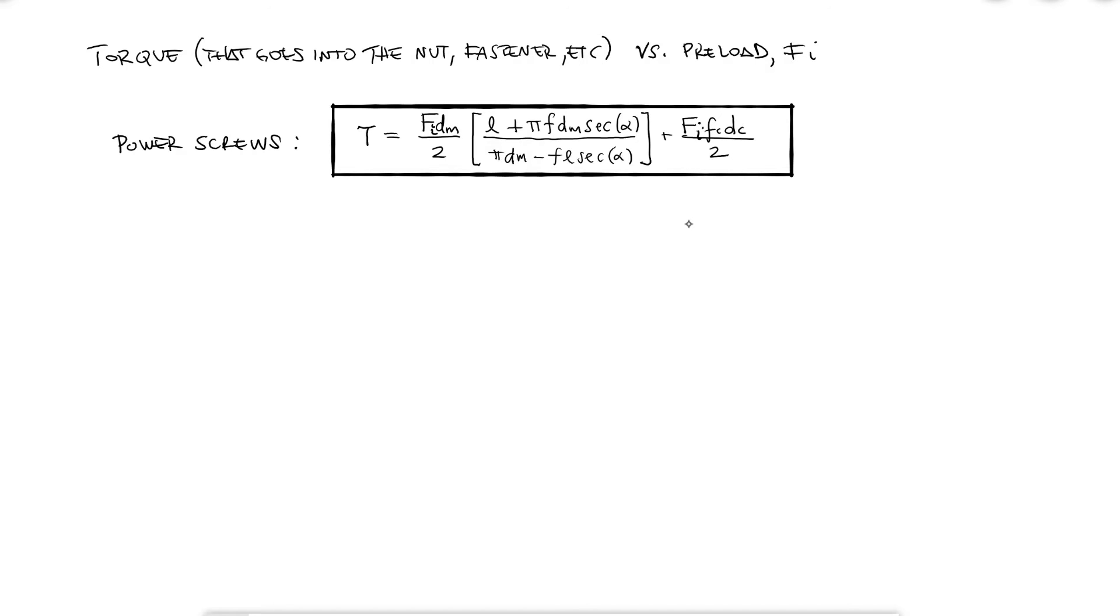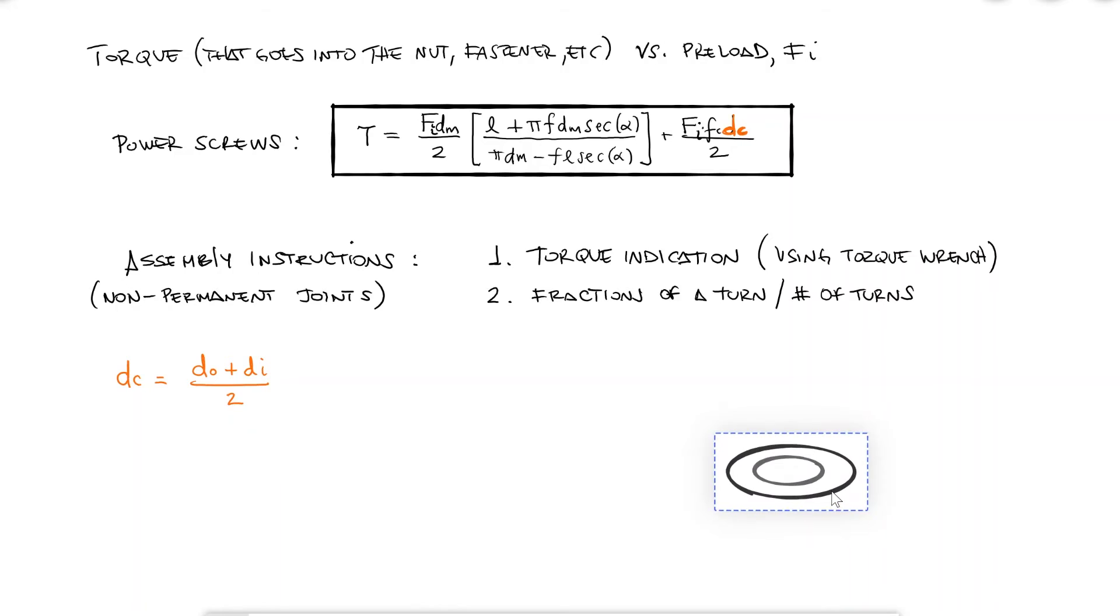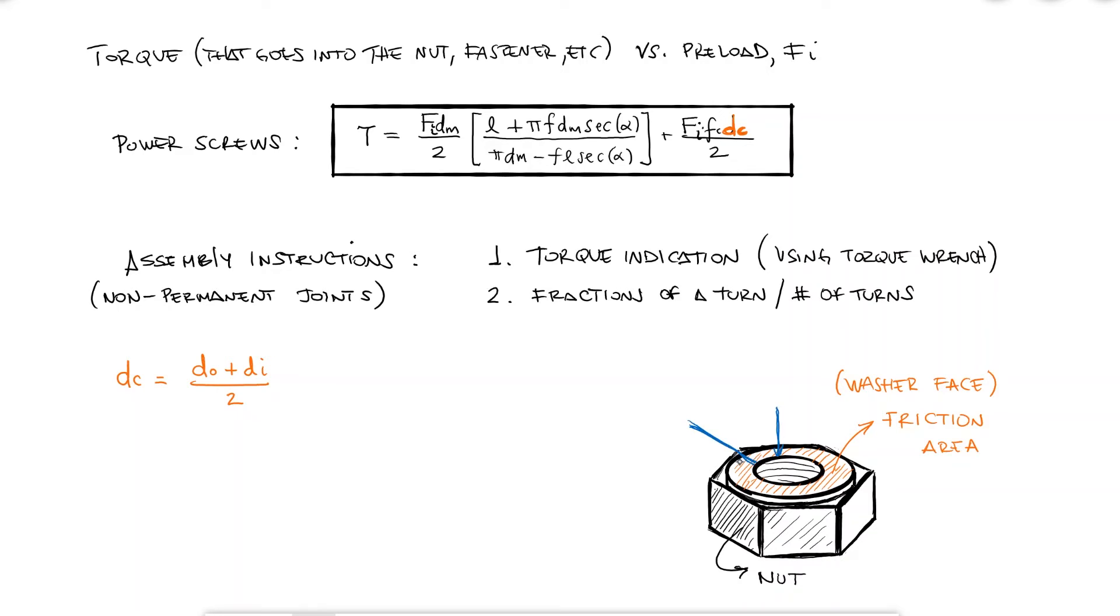Assembly instructions, both that you follow to assemble devices and those that you will write when designing components, will often include indications in terms of either fractions of a turn or number of turns after the initial contact, or a specified torque which you can achieve with a torque wrench or torque screwdriver which would stop when they reach the desired torque. The collar diameter DC will take the form of the average diameter between the inner and outer diameter of the nut. The outer diameter is usually 1.5 times the nominal diameter, which is the inner diameter. For this reason, DC will almost always be 1.25D.